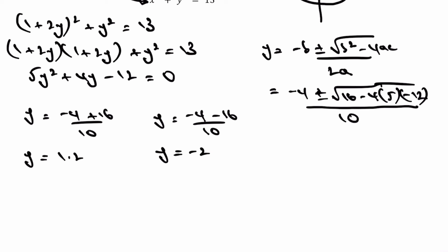And then it's really going back to our original x equals 1 plus 2y and taking these two values of y and substituting them in. So I'm going to get x equals 1 plus 2y. So that's going to equal 1 plus 2 times 1.2, and hopefully you get the idea.